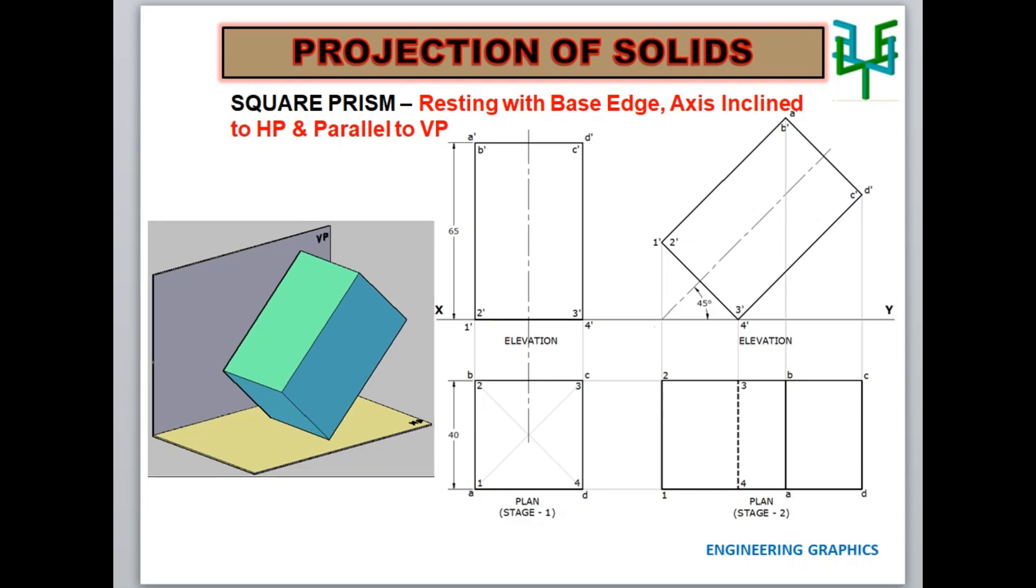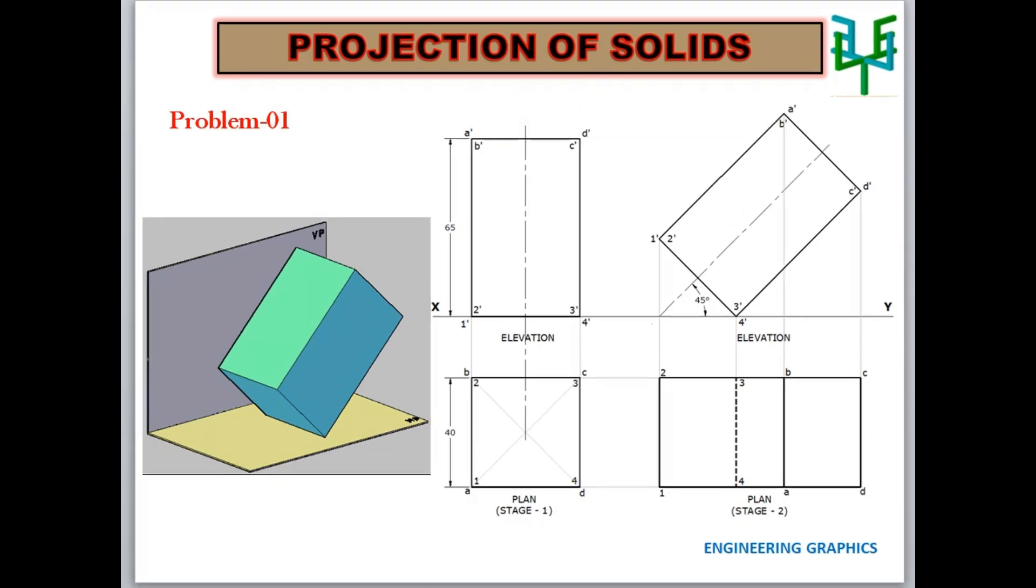In this video, we are going to discuss projection of square prism with the condition axis inclined to HP and parallel to VP. Basic conditions of the topic projection of solids are already explained in the previous videos. Let us see a specific problem.